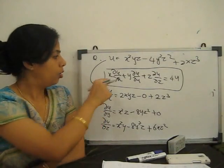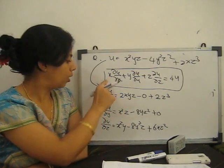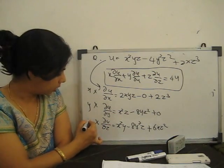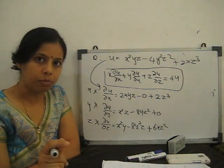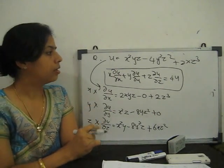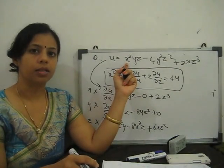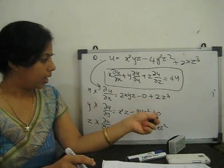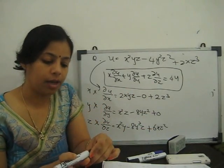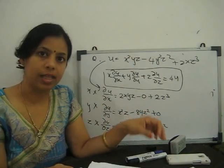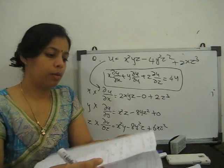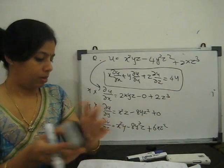For verification, we multiply ∂u/∂x by x, ∂u/∂y by y, and ∂u/∂z by z, then add them. This should give 4 times the original function u, which is our right-hand side. Hence, Euler's theorem is verified for this homogeneous function.